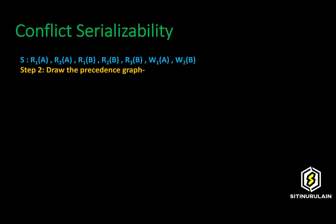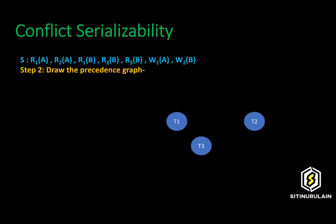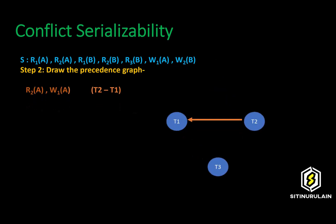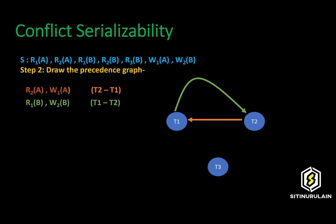In the second step, we need to draw the precedence graph. There are three transactions involved in Schedule S: transaction 1, transaction 2, and transaction 3. In the first operation, we need to create an edge between transaction 2 and transaction 1. In the second operation, we need to create an edge between transaction 1 and transaction 2.